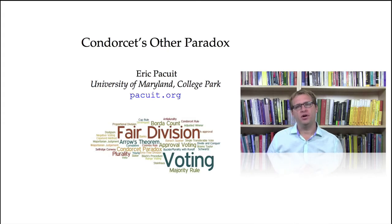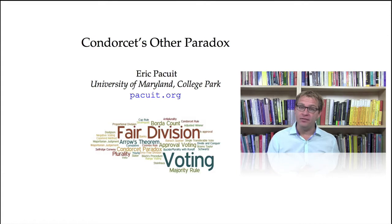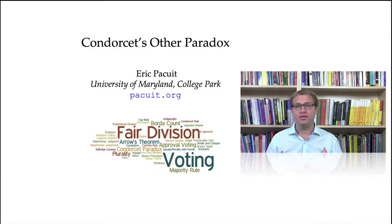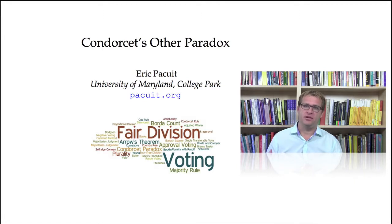We're going to begin our discussion of voting paradoxes by thinking a bit more about the Condorcet winner. Recall that the Condorcet winner is a candidate that beats every other candidate in a head-to-head election. We've already seen a major problem with this notion, namely the Condorcet paradox — a situation in which a Condorcet winner may not actually exist. In this lecture, I want to look at another observation of Condorcet, which has become known as Condorcet's other paradox.